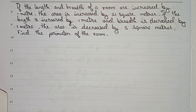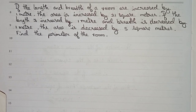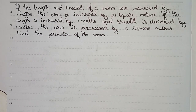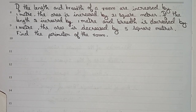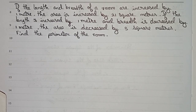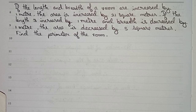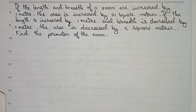Hello guys, welcome to this video. In this video, the question is: if the length and breadth of a room are increased by 1 meter, the area is increased by 21 square meters. If the length is increased by 1 meter and the breadth is decreased by 1 meter, the area is decreased by 5 square meters. Find the perimeter of the room.